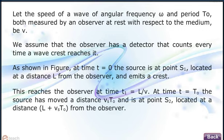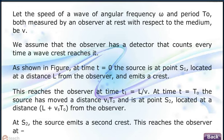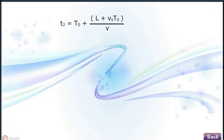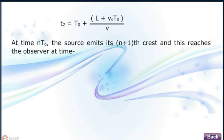This reaches the observer at time t equals L by v. At time T0, the source is at point S2 located at a distance L plus Vs T0 from the observer. At S2 the source emits a second crest, which reaches the observer at T2 equals T0 plus (L plus Vs T0) by v.